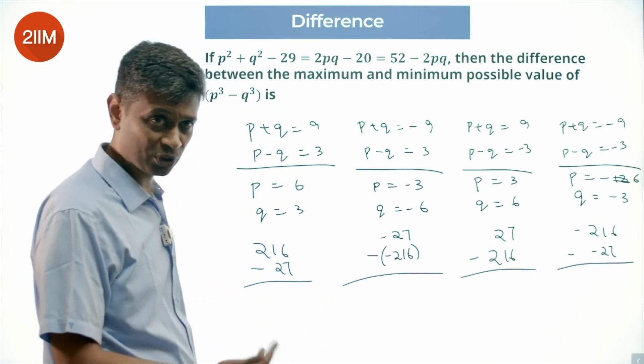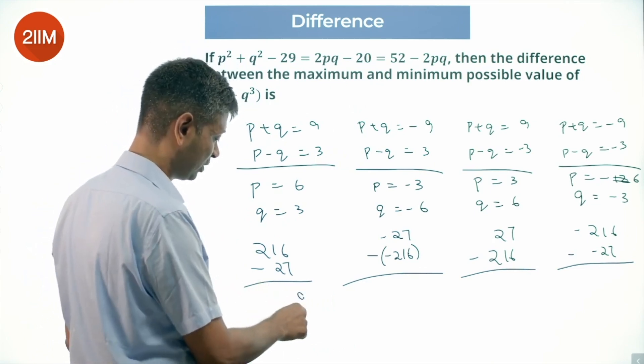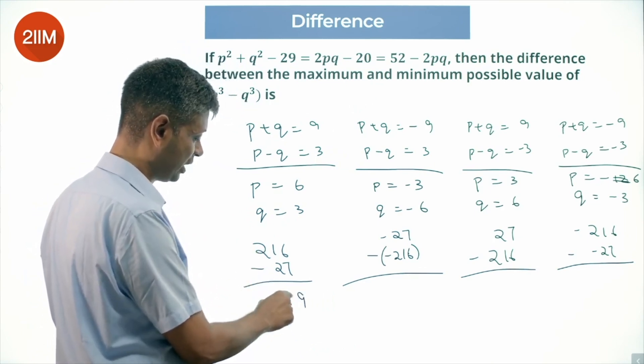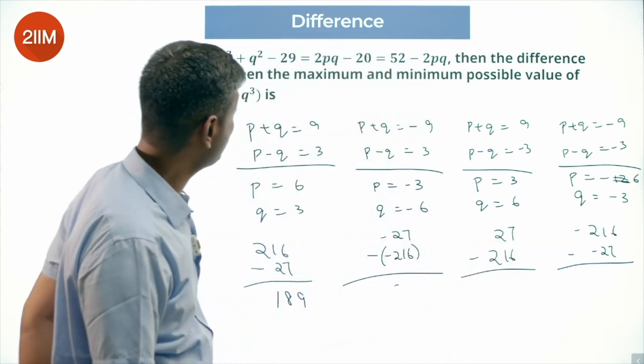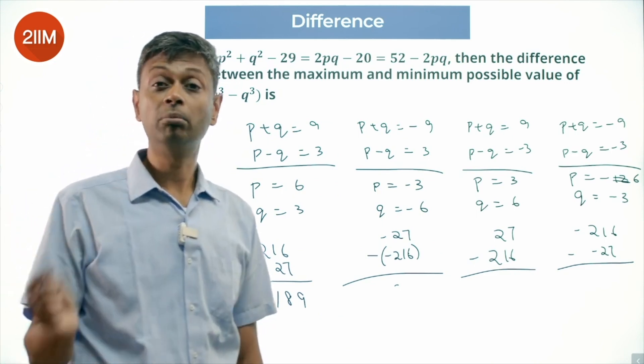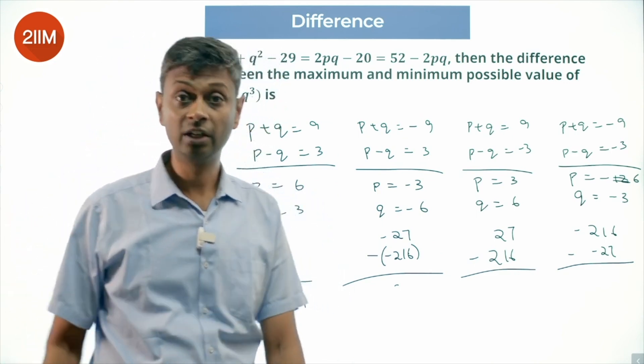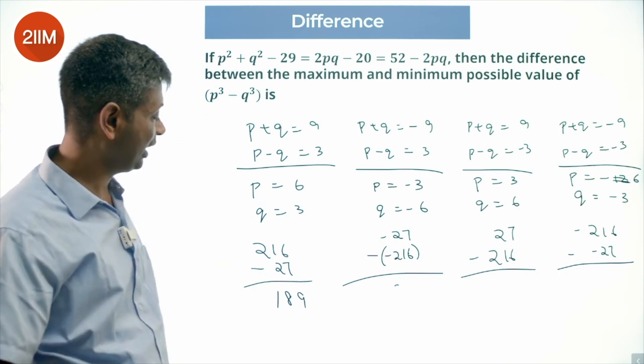The maximum possible is 16 minus 7 is 9, 189. This will also be 189. These two will be minus 189. The maximum possible is plus 189, minimum possible is minus 189, the difference is 189 into 2.